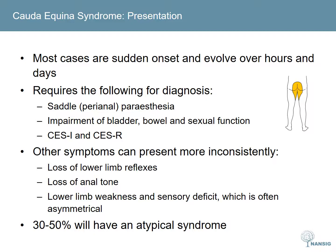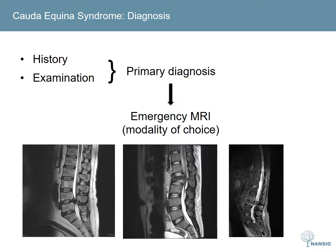It is important to remember that as many as 50% of presentations will have an atypical syndrome. Initial diagnosis can be made following a suggestive history and examination. Emergency MRI of the lumbar spine is the modality of choice. If compression of the cauda equina is confirmed, a referral to the local neurosurgical unit or spinal team should be made. If MRI is contraindicated, CT myelogram can serve as an alternative.